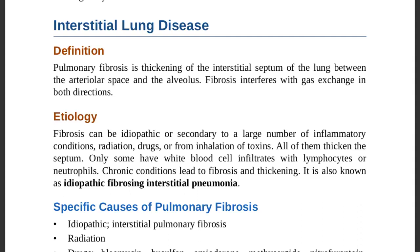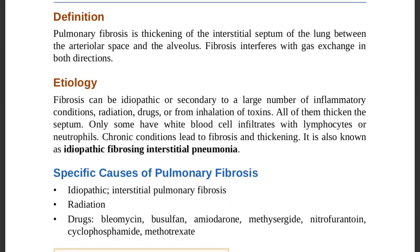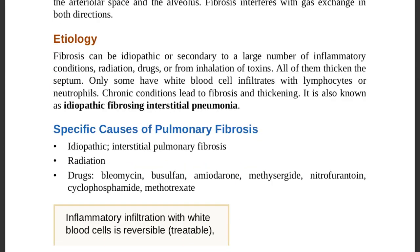All secondary causes — inflammatory conditions, radiation, drugs, inhalation of toxins — thicken the interstitial septum. Only some have white blood cell infiltrates with lymphocytes or neutrophils. Chronic conditions lead to fibrosis and thickening over time. It is also known as idiopathic fibrosing interstitial pneumonia.